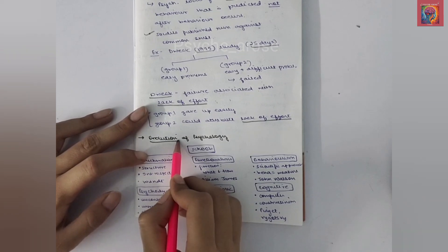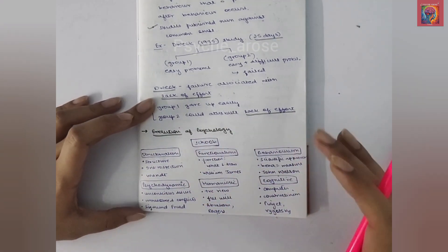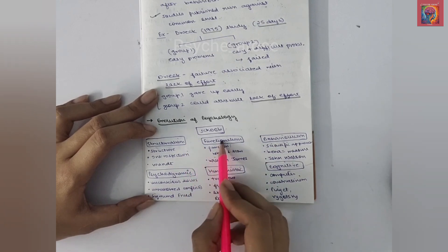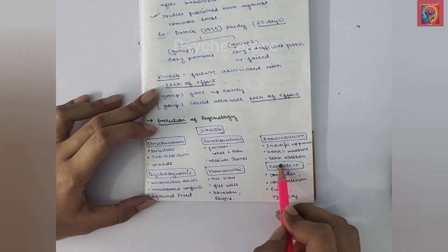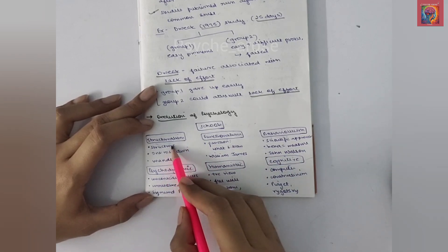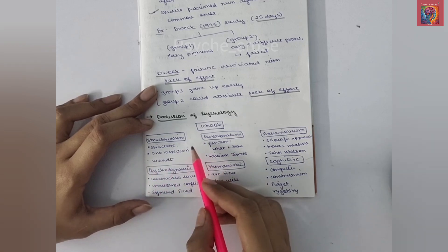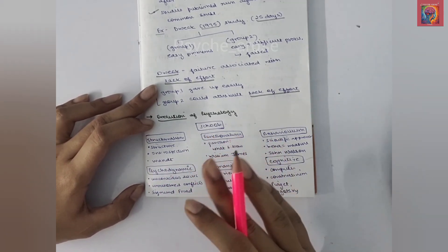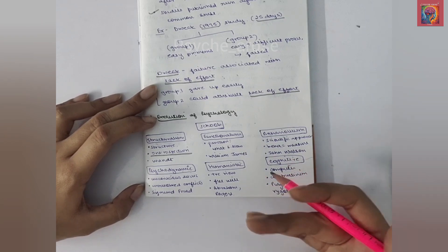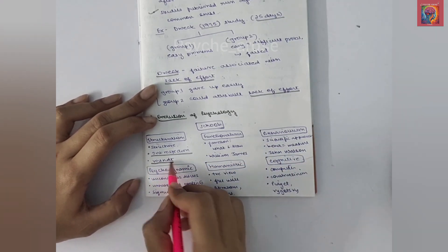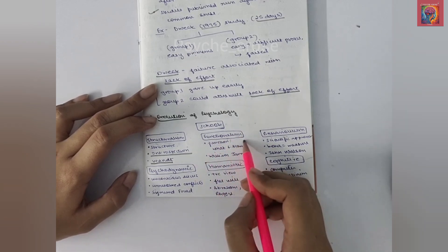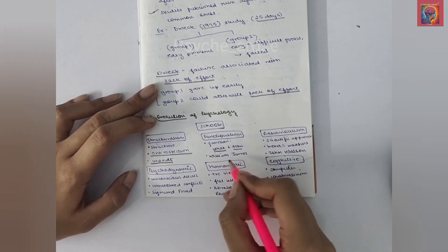Now we study the evolution of psychology. In different time periods, changes occurred — we call these schools or perspectives of psychology. There are six major ones: structuralism, functionalism, behaviorism, psychodynamic, humanistic, and cognitive — you can make a mnemonic. Structuralism, as the name suggests, tries to study the structure of the mind through introspection. Functionalism studied how the mind functions and was developed by William James.